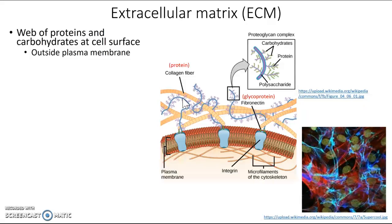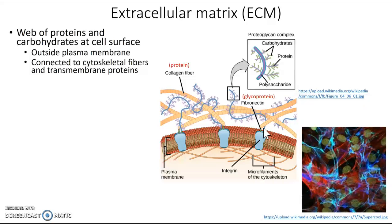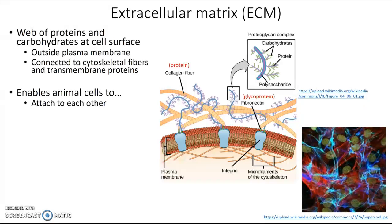Even though these molecules are outside, they are connected to the cytoskeletal fibers through transmembrane proteins. You can see here this proteoglycan fiber that's connected to the fibronectin on top of a protein, and that protein in turn is connected to the microfilaments inside the cell. So in a way, it connects the outside to the inside of the cell, and this enables animal cells to attach to each other, grab onto each other, and also to communicate with each other.